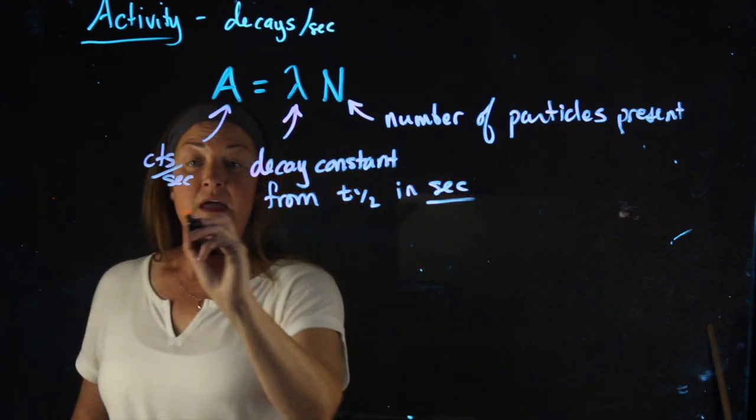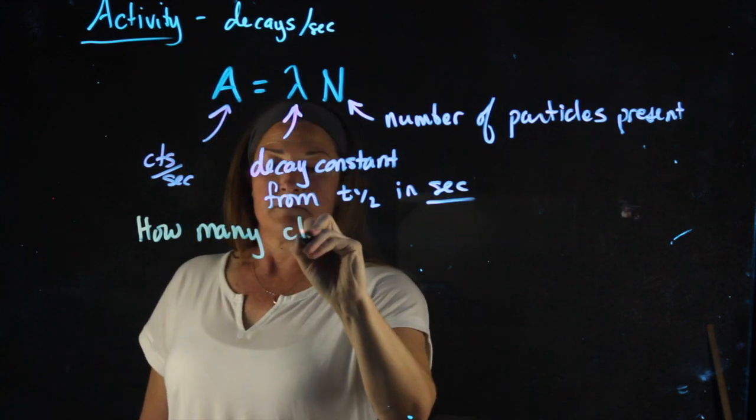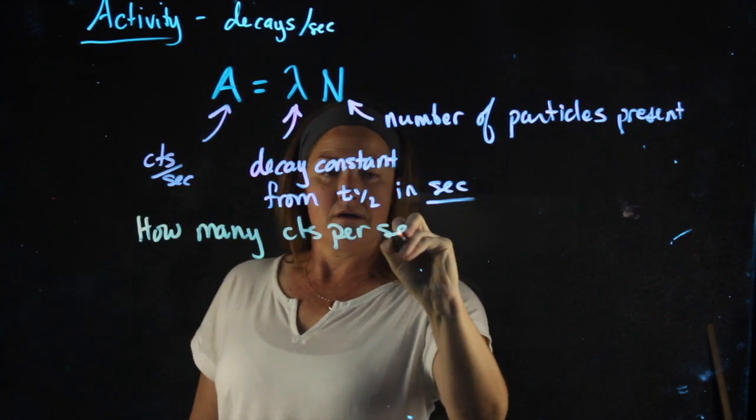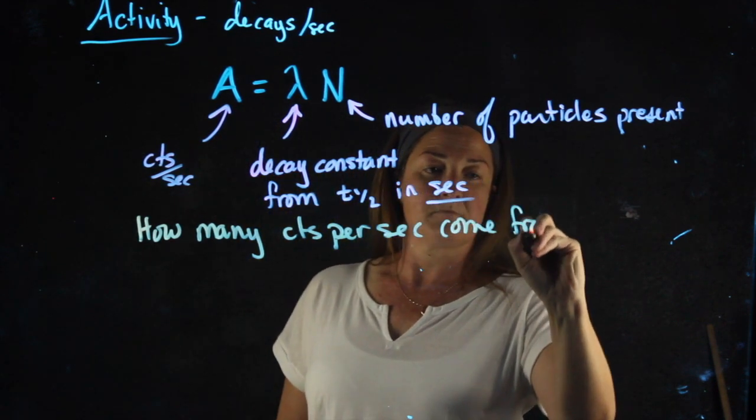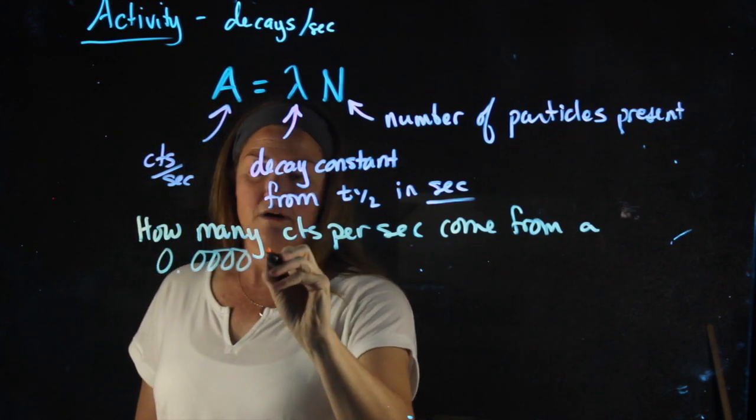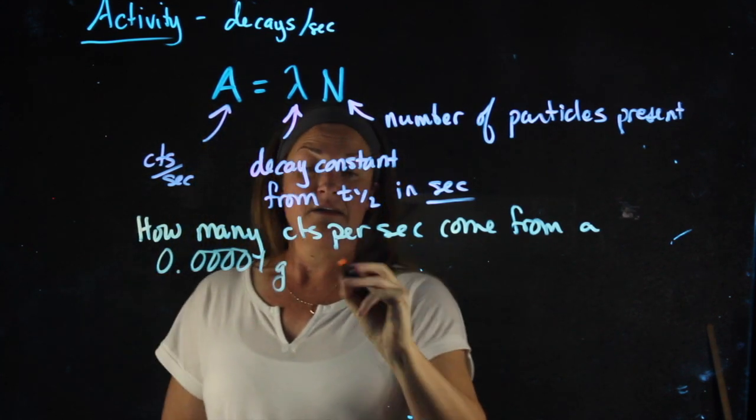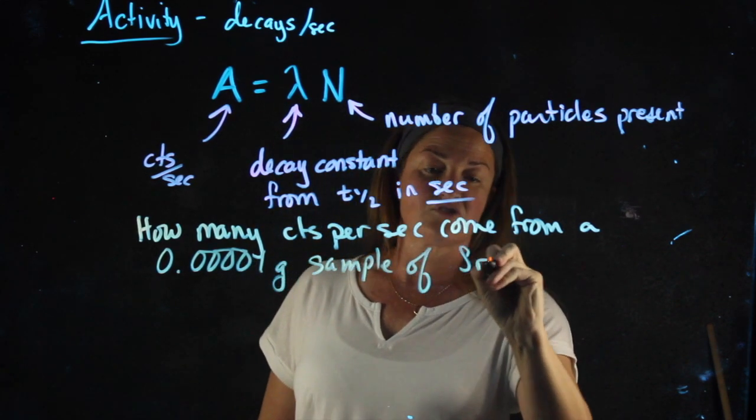If we take a look at a sample problem, how many counts per second come from a 0.00001 gram sample of Strontium-90.